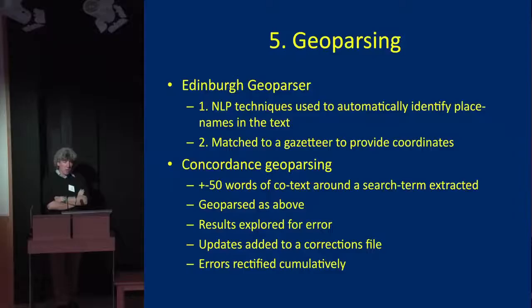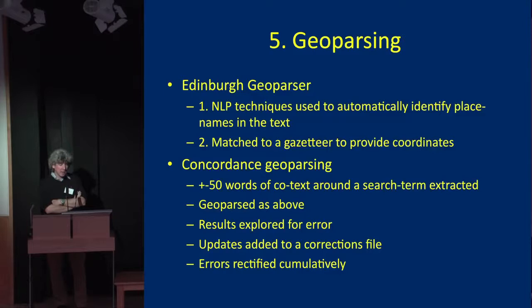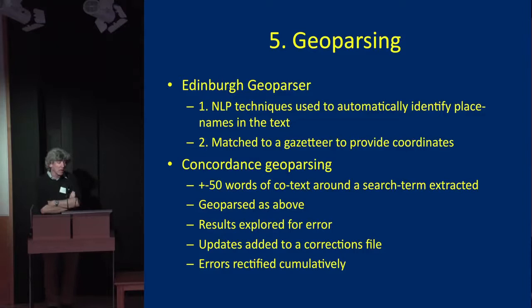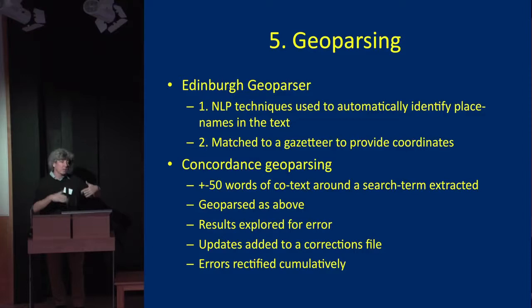Instead, we've been using a technique we call concordance Geoparsing: we start with a search term — it could be war, a disease, whatever — then use corpus linguistics software to extract 50 words of context before and after that search term. We Geoparse those concordance lines. Because you have a relatively manageable set of data, you can explore the results for error, update them, and add those updates to a corrections file that you build up cumulatively. As the process goes on, you're correcting for errors incrementally, and you can have confidence that your Geoparsing is working — which you wouldn't have with the conventional whole-corpus approach.